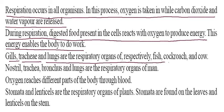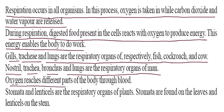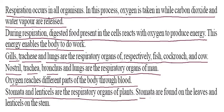Lungs are the respiratory organs of birds, respectively. Fish, cockroach, and cow have gills, trachea, and lungs. Nostril, trachea, bronchi, and lungs are the respiratory organs of humans. Oxygen reaches different parts of the body through blood. Stomata and lenticels are respiratory organs of plants. Stomata are found on the leaf and lenticels are on the stem.